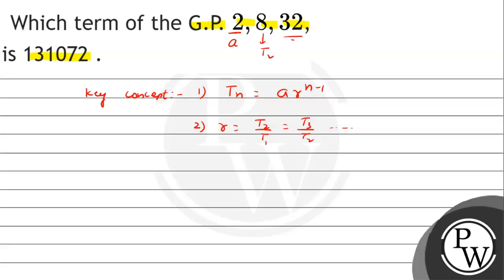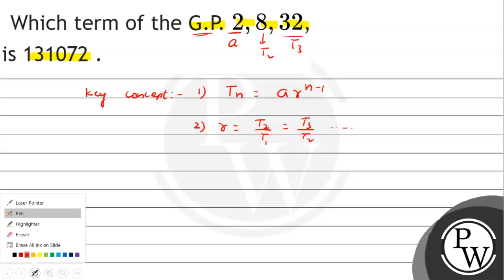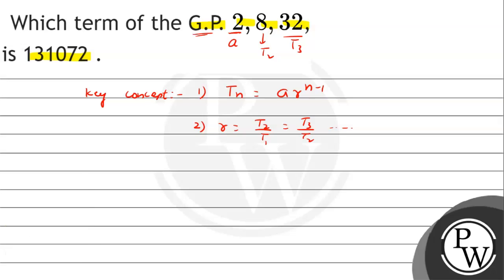We can identify the terms: the first term is 2, the second term is 8, and the third term is 32. Since it is a GP, the common ratio r = 8/2 = 4.